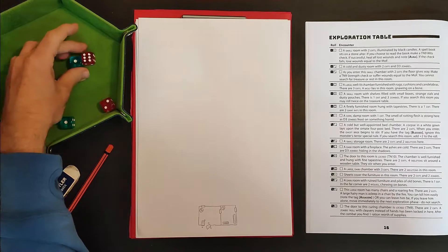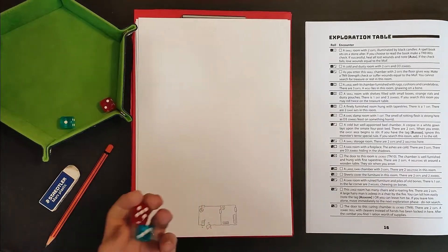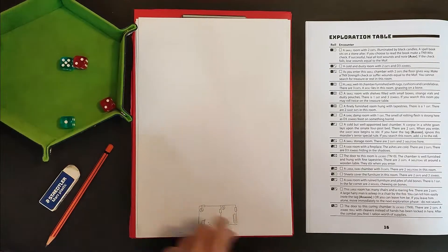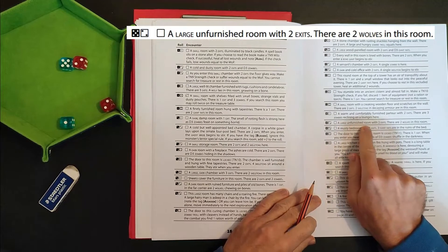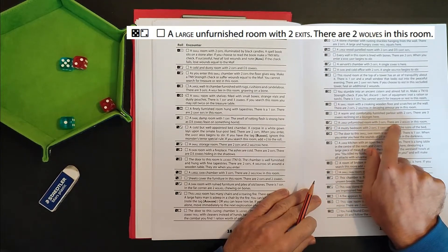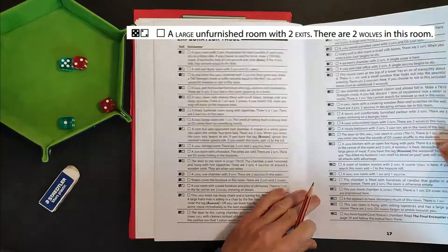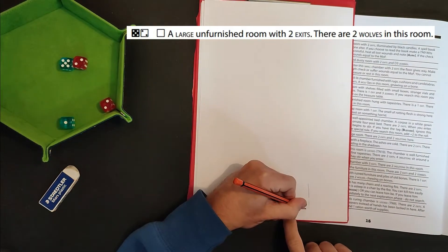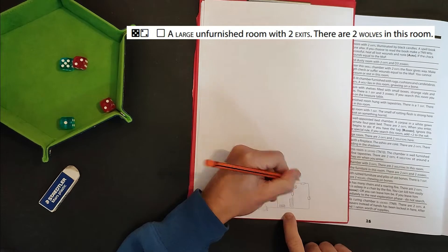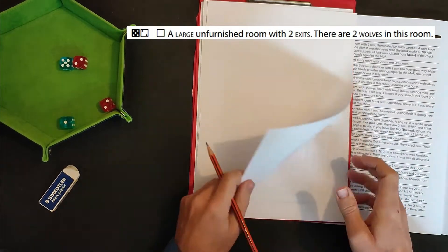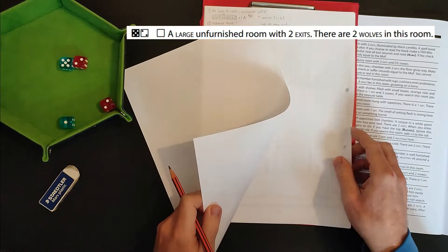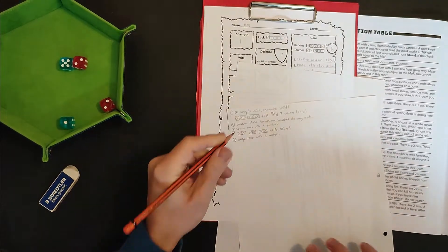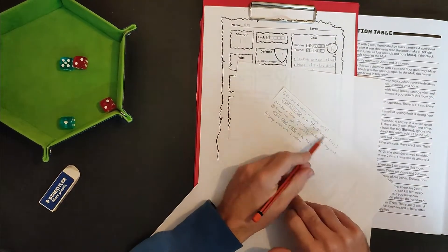So we're in here, we're going to go through this door here and see what room we find beyond. And for that we're going to roll 2d6 and that will give us a number. Number 52. We've got a large unfurnished room with two exits. There are two wolves in this room. Wolfie roommate. I tend to number each room. It's not really necessary but it allows me to track what happened in each room and things like that.